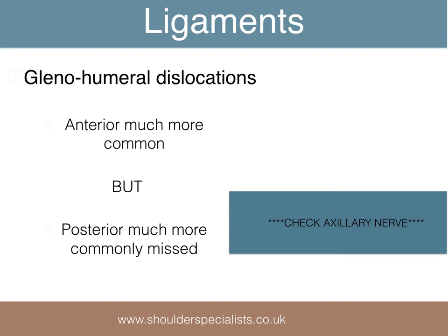In about 5% of cases the shoulder dislocates backwards or posteriorly. Unfortunately, posterior dislocations are on occasions missed in the accident and emergency environment. With shoulder dislocations, it is very important to check for axillary nerve function by testing for sensory loss in the mid-deltoid or regimental badge patch area, and testing for contraction of the three heads of the deltoid.